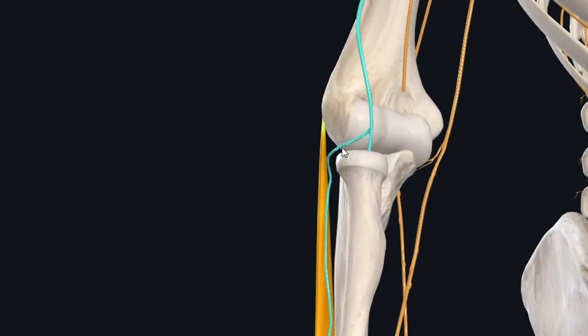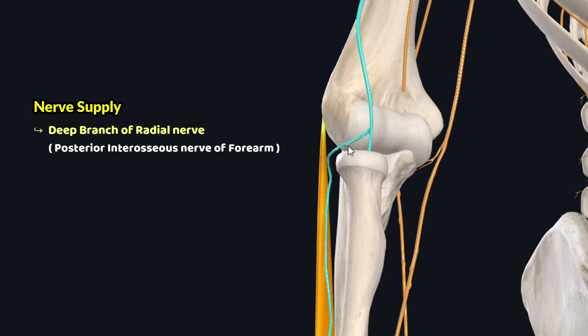Now let's talk about the nerve supply of this muscle. The extensor digiti minimi receives its innervation from the deep branch of the radial nerve, also called the posterior interosseous nerve of the forearm.